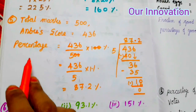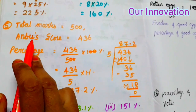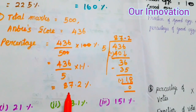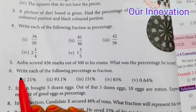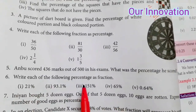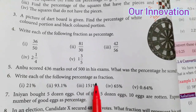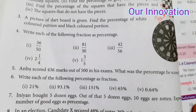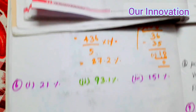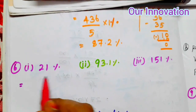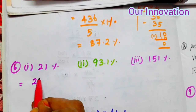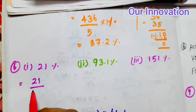So the percentage Anbu scored is equal to 87.2 percentage. Sixth one: write each of the following percentages as a fraction. First one is 21 percentage, which equals 21 by 100.